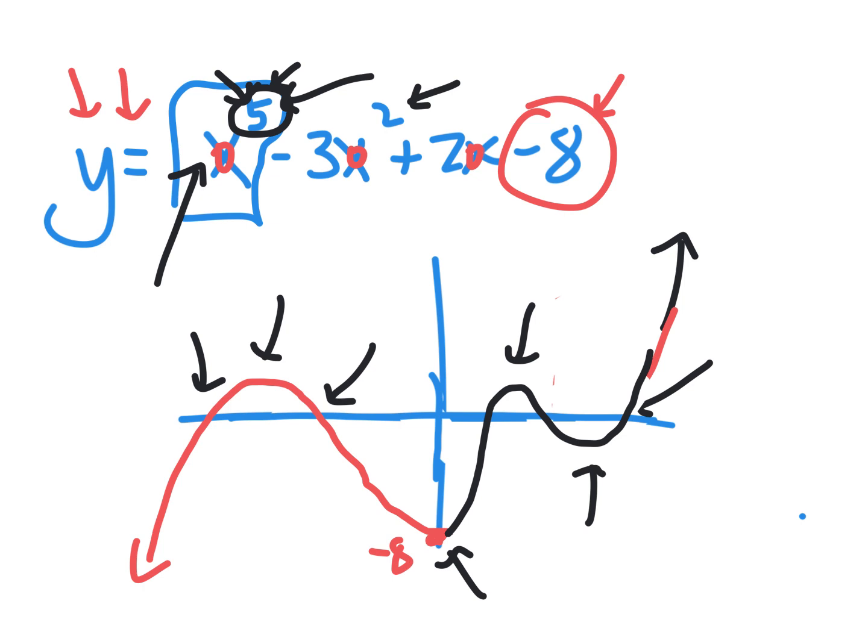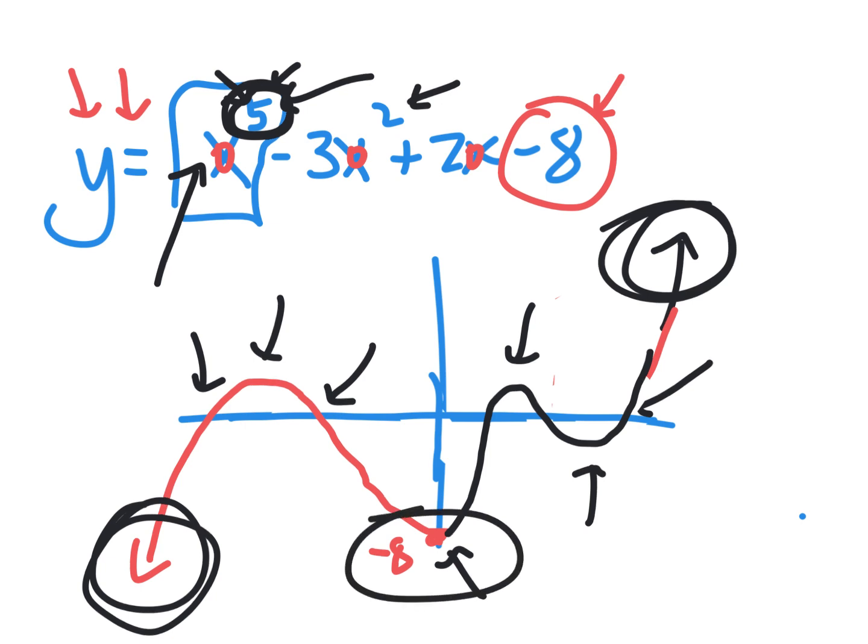and it's degree 5. So that's also a plausible graph. So weirdly, there's lots of right answers for this. So if you had one that was going up on the right and down on the left, because the fact that this is odd means you end up with different ends. And if you had one that went through negative 8 as the y-intercept, then yours was good.